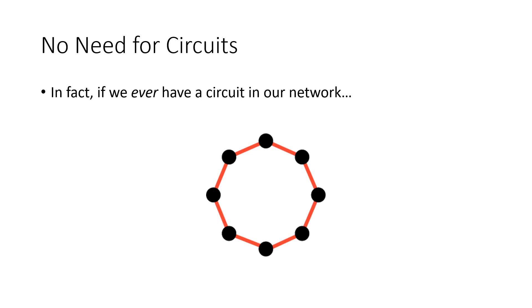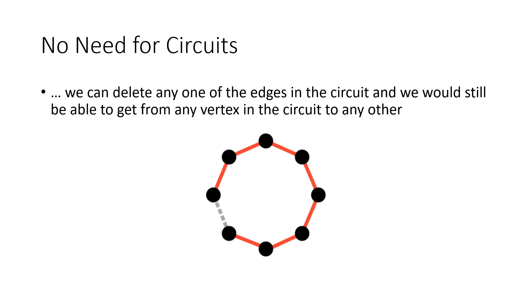In fact, if I ever had a circuit in my network, remember a circuit means I've got a loop here. If I ever have a circuit in my network, I can actually eliminate any one of those edges and still get from everywhere to everywhere else. For example, I could omit this edge here. And again, even though it might look inefficient, I can still get from this edge all the way around. I have to walk a little bit, but I can get all the way around to the other edge. So it's still connected.